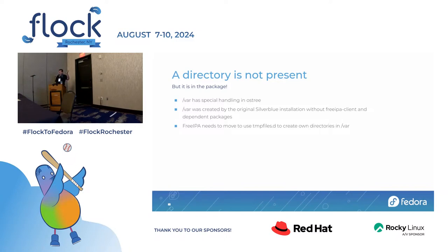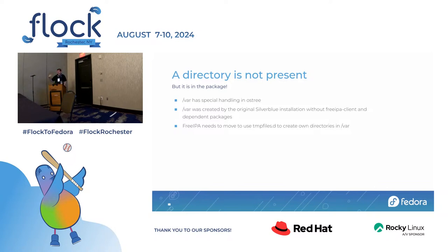By creating directories through systemd tmpfiles.d, you're sort of violating the environmental requirements on a normal non-immutable system. It's a conflict of approaches because as soon as the tmpfiles.d snippet is active on a normal system, it might change permissions and trigger RPM verification flagging entries as modified. That's a problem we're still fairly bad at finding an answer for - regardless of whether it's IPA or something else, it's a common problem.